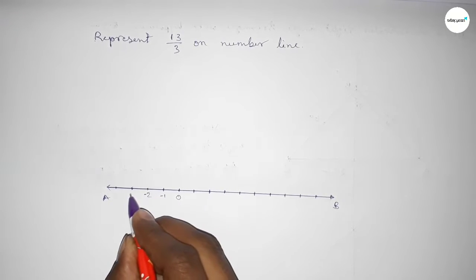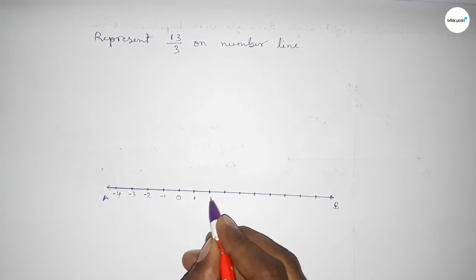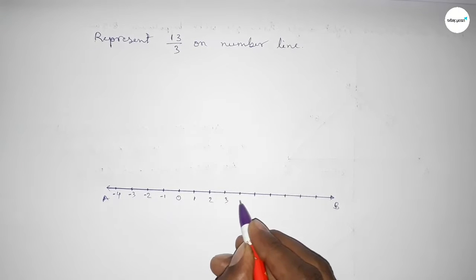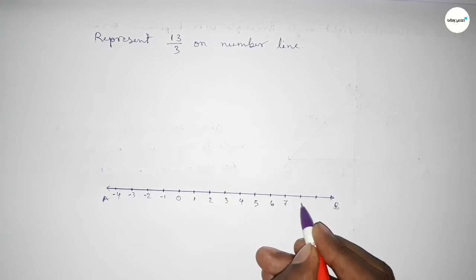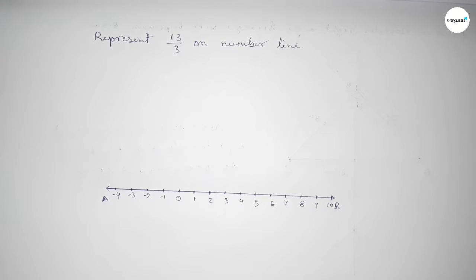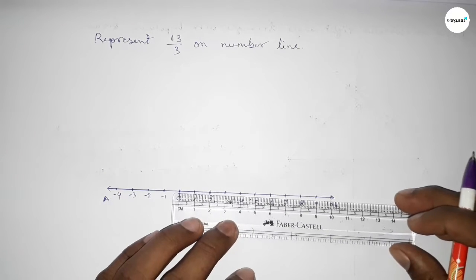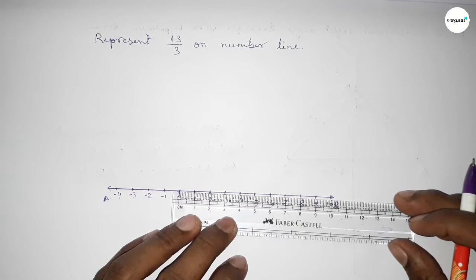Taking here starting number 0, this side minus 1, minus 2, minus 3, minus 4, and this side 1, 2, 3, 4, 5, 6, 7, 8, 9, 10. Now we have to divide the distance between any two numbers into three parts approximately.